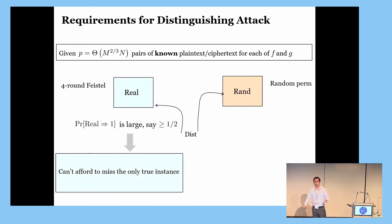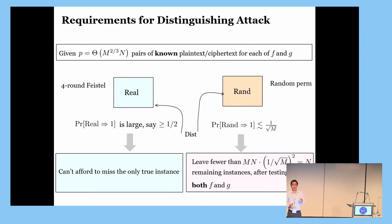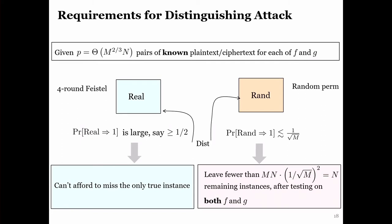So, in the real world, we want the distinguisher to output correctly with high probability, say half. So, there's only a true instance there. We can't afford to miss that. On the other hand, in the random world, we want the distinguisher to output incorrectly with very, very small probability, say, proportional to about 1 over square root of M. So, why square root? The reason is that we will run the test twice for each instance, one for F and another for G. So, for false instance, the chance that you will incorrectly accept it would be, at most, 1 over M. And if you have MN false instances, expectedly, there are just about N instances that survive the test.